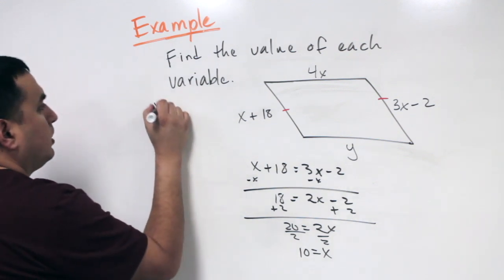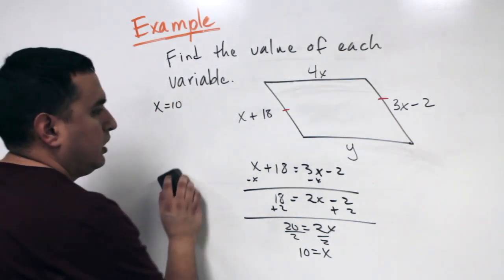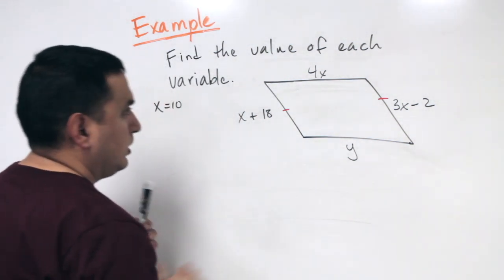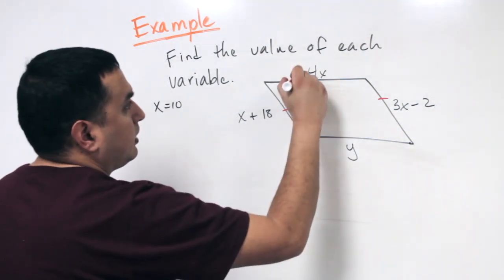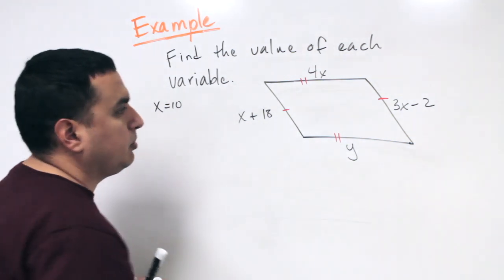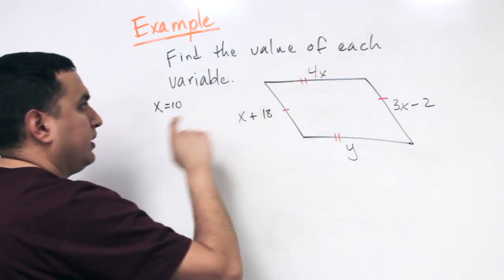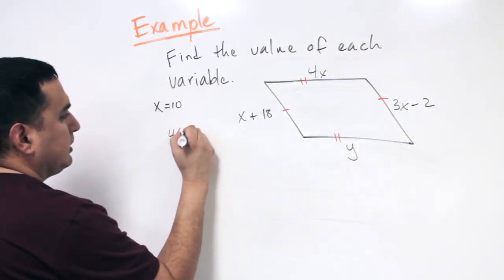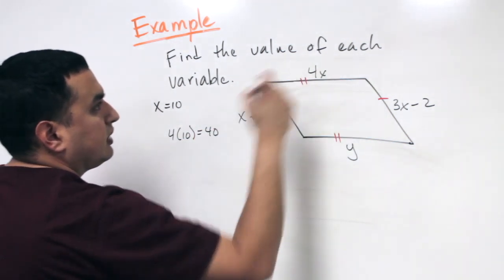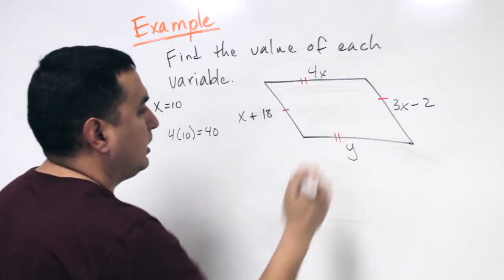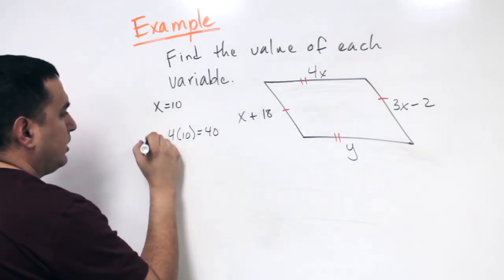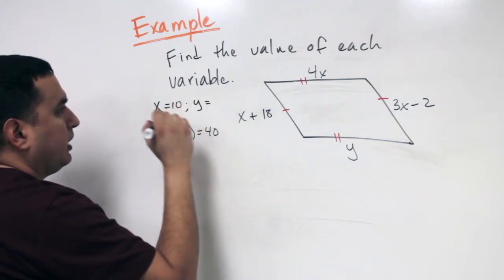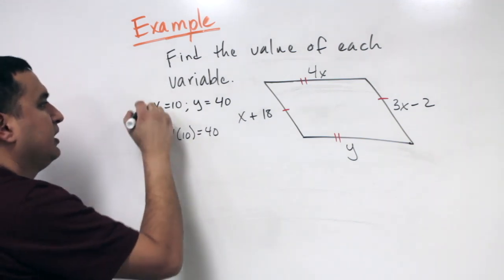So X equals 10. Now I'll solve for Y. Since opposite sides are congruent, the segment on top is congruent to the segment on the bottom. Now that I know X is 10, I can substitute in: 4 times 10 equals 40. So the top length is 40, and since opposite sides are congruent, Y must be 40. So X is 10 and Y is 40.